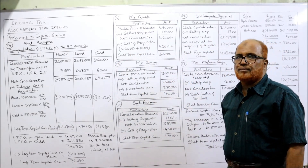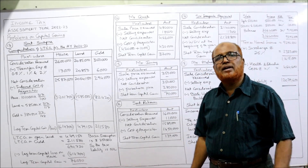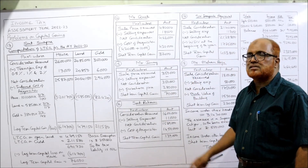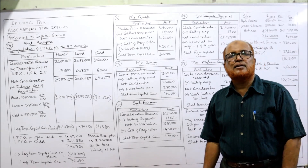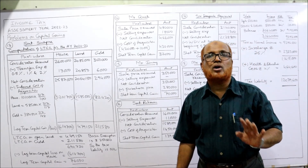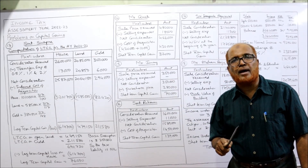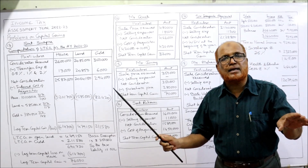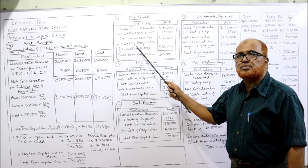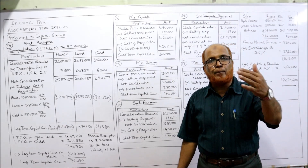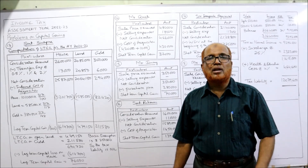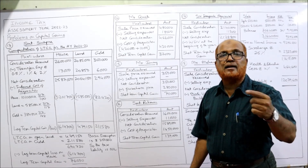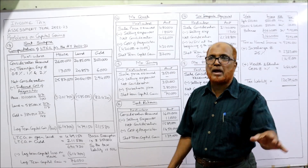Mr. Quick's sale price received: ₹4,80,000. Deduct brokerage paid on selling the building: ₹18,000. Net consideration: ₹4,62,000. From net consideration, deduct the cost of acquisition — not indexed cost of acquisition, because indexation applies only for long-term capital gain. For short-term capital gain, the actual cost is used. The actual purchase price of the building was ₹4,20,000, and brokerage paid on purchasing the building is ₹10,000, so the cost of acquisition is ₹4,30,000.